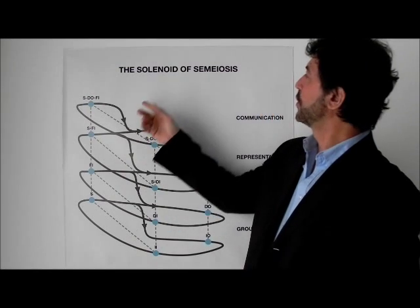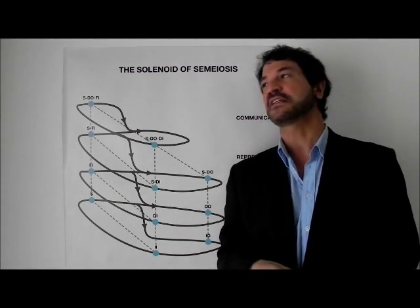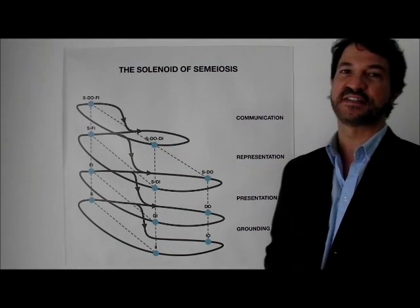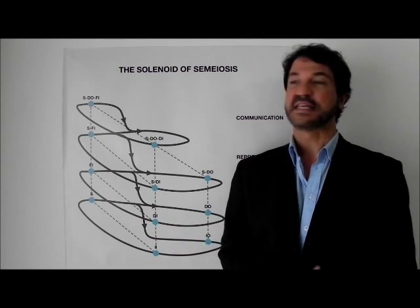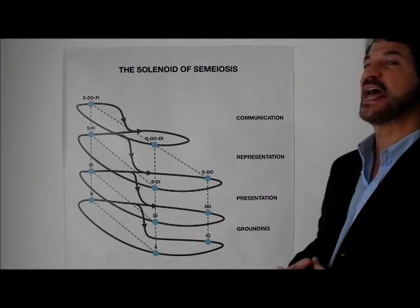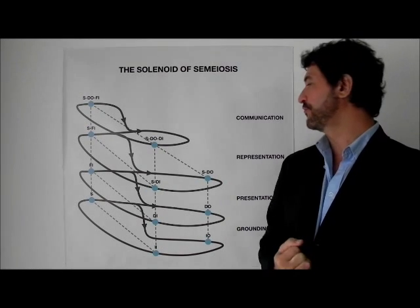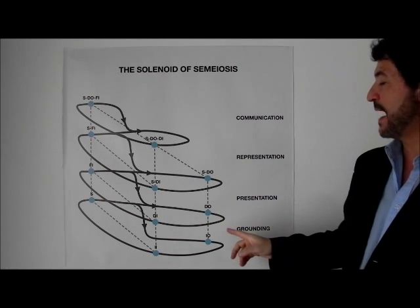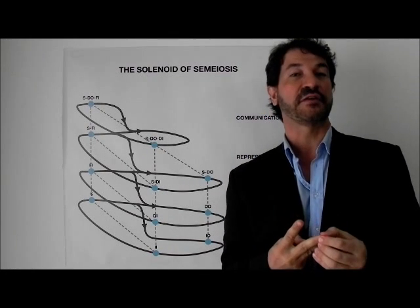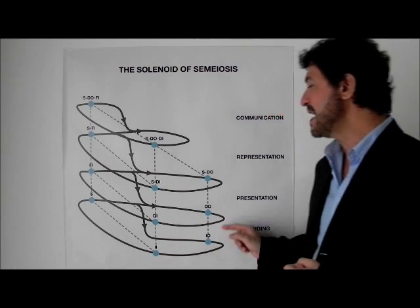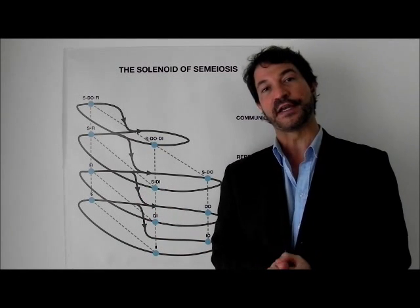This is the solenoid of semiosis — that is, the action of signs. That means that the solenoid of semiosis is in activity, in movement. Better yet, it is pulsing. It has a dynamics. And the pulse of the solenoid of semiosis is given by the way the three categories — firstness, secondness, and thirdness — enter into each of the 11 aspects of the solenoid.